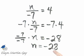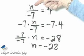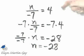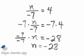That means that is our proposed solution. I'll let you check, and you check by replacing n with negative 28 in the original equation and seeing that a true statement will occur. It will, and this is your solution.